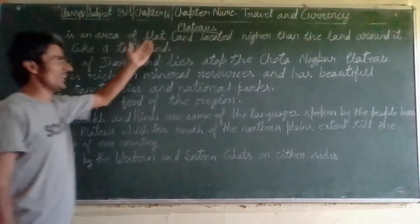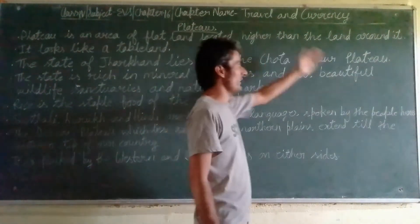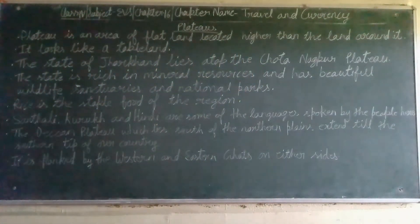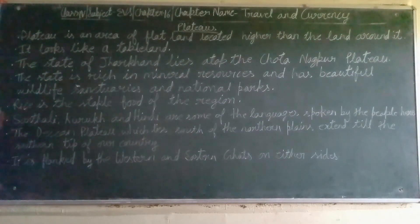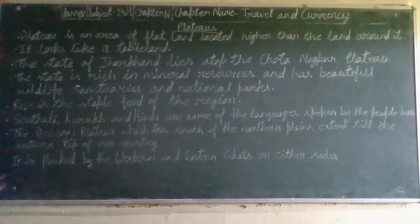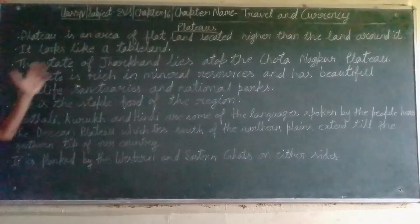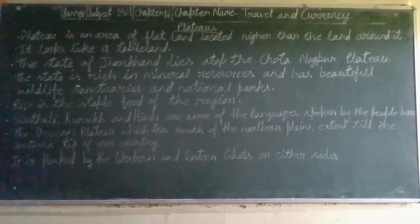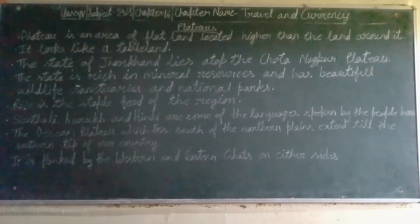Plateaus is an area of flat land located higher than the land around it. It is a land that is flat and it is a little bit higher than the land around it. Whatever the land is here, it is high in comparison to the height of that land. It looks like a table land. You know that a table is a little bit higher than the floor, so same as the plateaus also looks like a table. So it is also known as the table land.